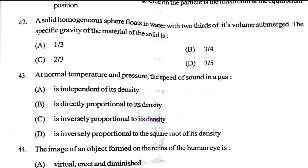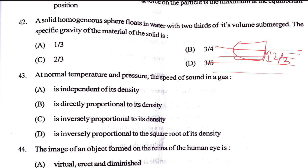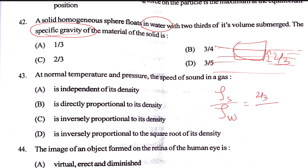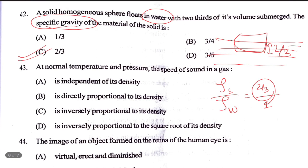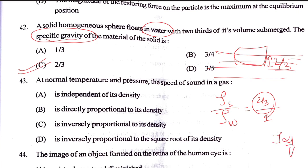A solid homogeneous sphere floats in water with two-thirds of its volume submerged. What is the specific gravity of the material? The relative density equals the density of the solid divided by the density of water. Two-thirds of the volume is submerged, so the density is two-thirds. The answer is likely option C — two-thirds, or 2/3.